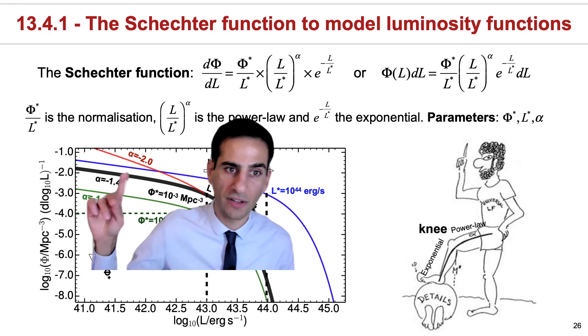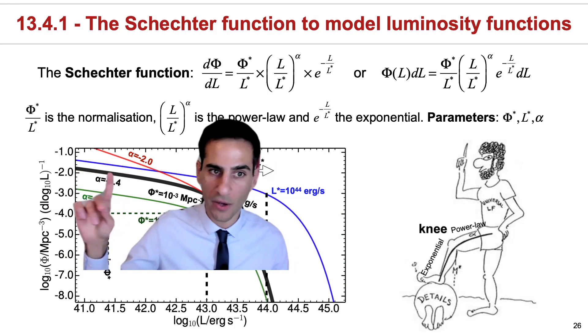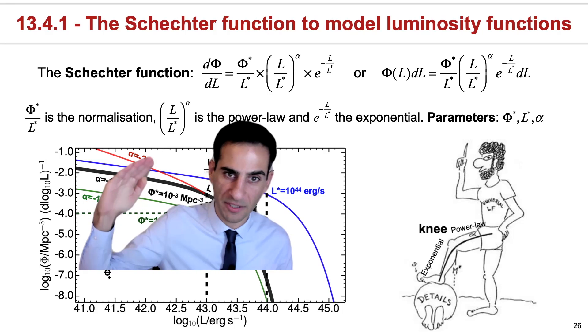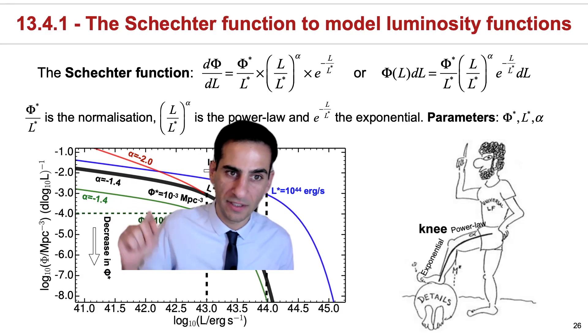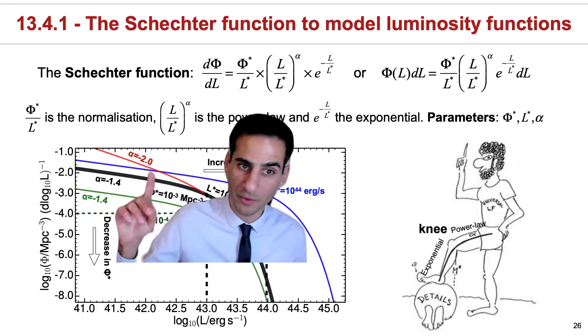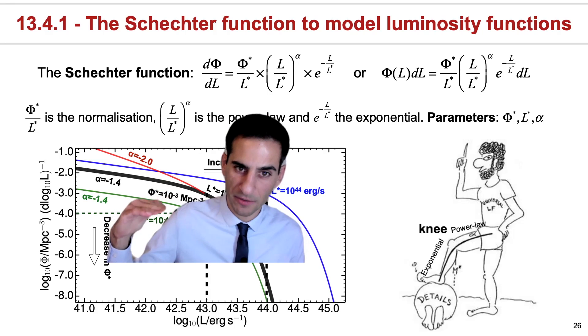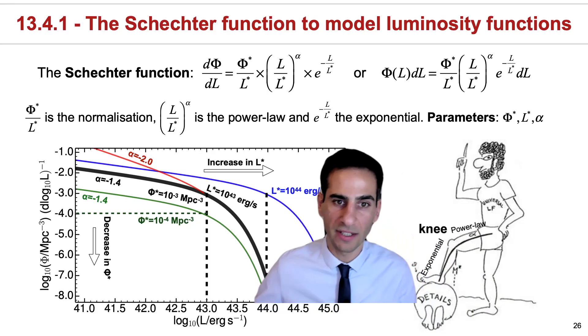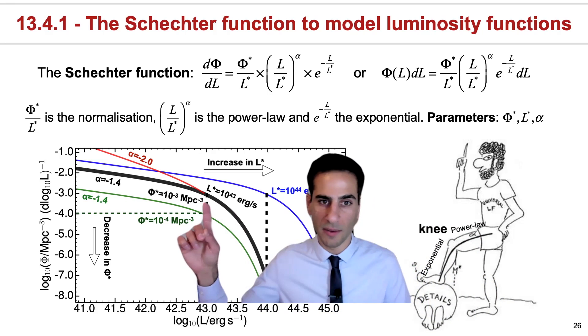On the other hand, what alpha is doing is essentially setting how steep the power law is. If you make alpha more negative, it will become steeper. This means that you will have even more faint sources or higher number density of faint sources. And if alpha is decreased, then the function becomes flatter.